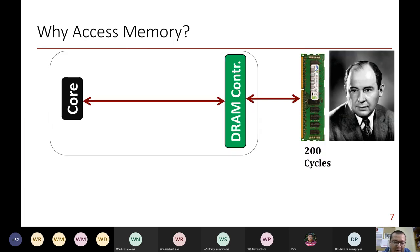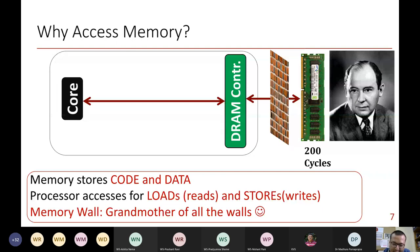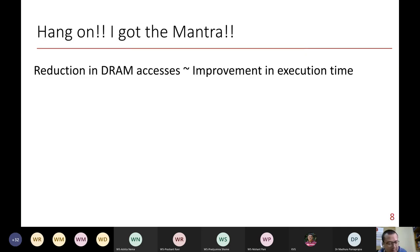A quick reminder of why we access memory: this is because of Von Neumann's stored program concept, where data and instructions are stored in memory, and whenever code wants to operate on them, it demands data and instructions from memory. That's why it creates what's known as the memory wall — termed in the architecture community as the grand mother of all walls, because the community is still working on this problem of hiding the latency of getting data and instructions from DRAM.